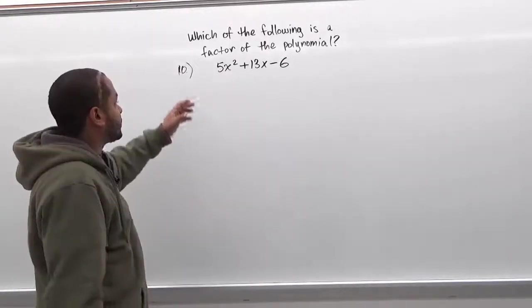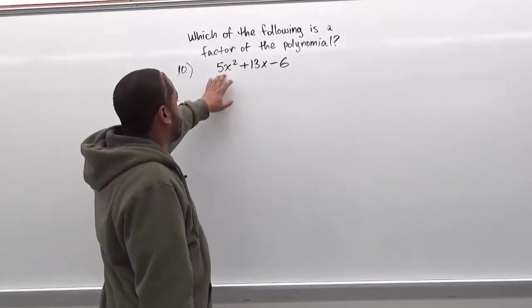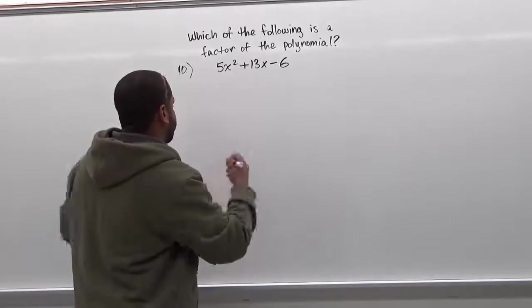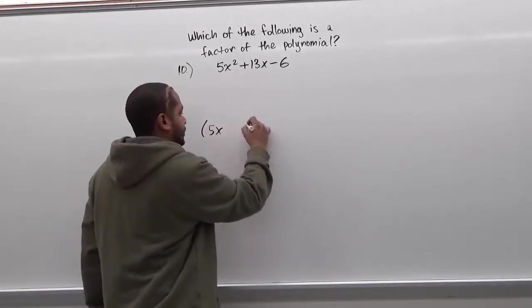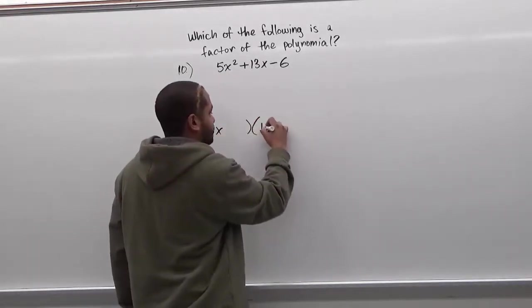Alright, let's begin. We're going to first take the factors that make 5x squared and place them in two sets of parentheses. So we have here 5x and in the second parentheses set we have just 1x.